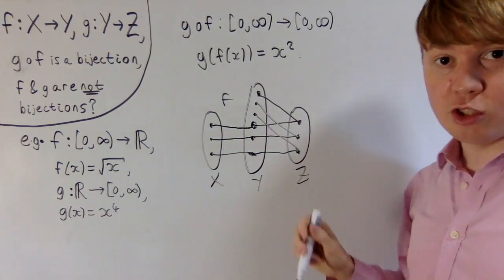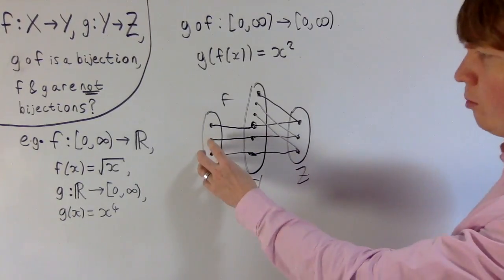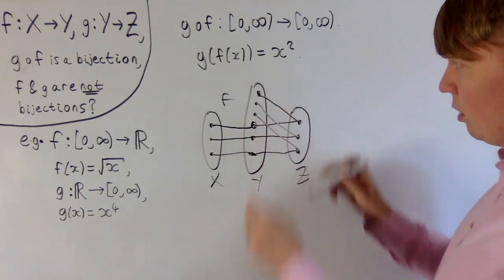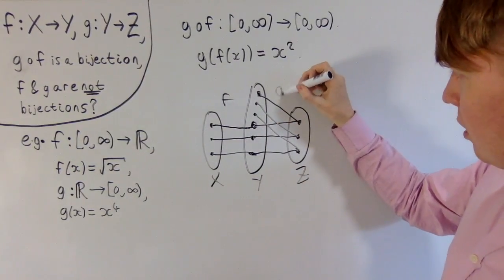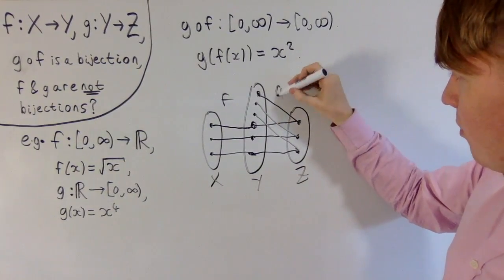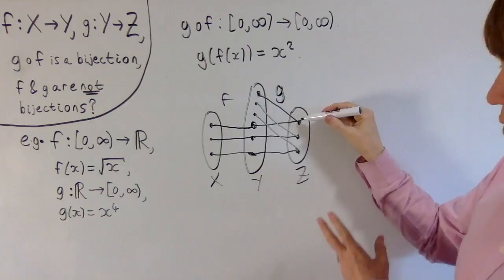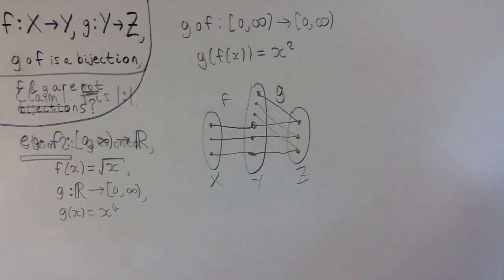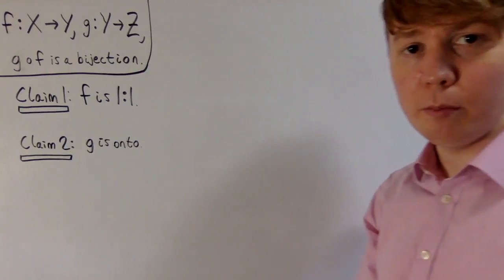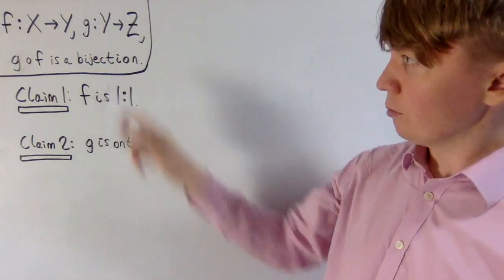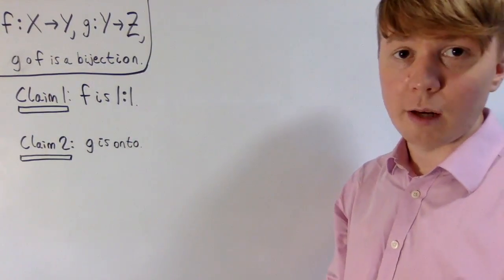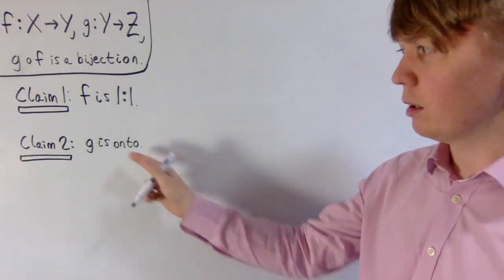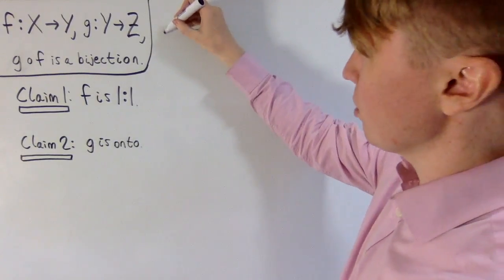So let's have a look at the more general theory: f has to be one-to-one, but it doesn't have to be onto. And g, which maps from Y into Z, has to be onto, but it doesn't necessarily have to be one-to-one. So let's have a go at proving, first of all, that if g∘f is a bijection, then f has to be one-to-one, and later we'll prove that g has to be onto as well.